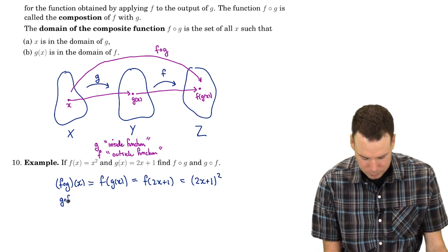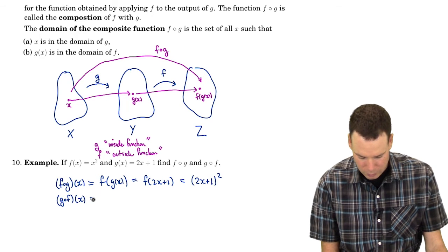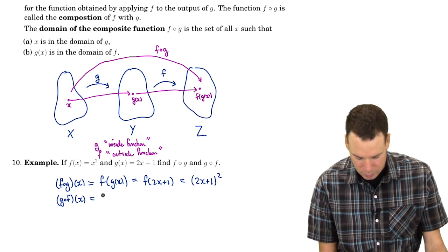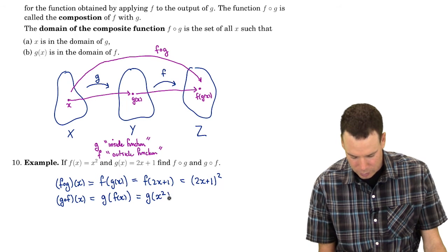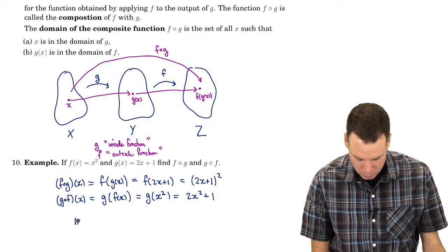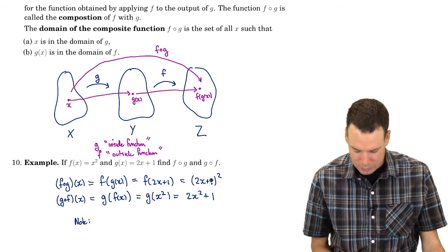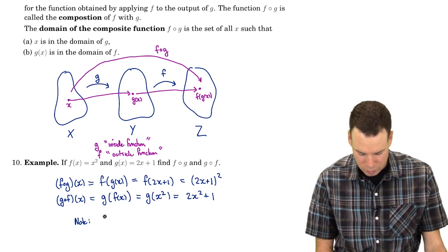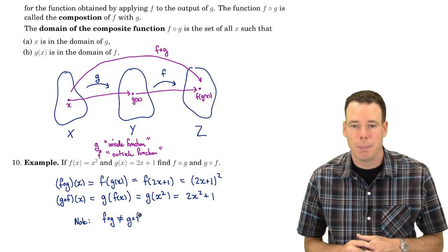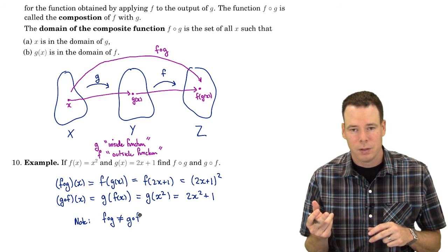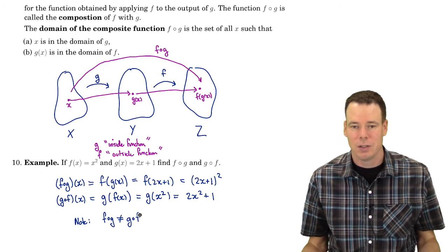On the other hand, g composed with f at x means we do f first and then g second. So this is g of x squared, which gives 2x squared plus 1. We need to note that these are different functions — f composed with g does not equal g composed with f. So the order in which composition is done matters; doing it one way will likely give a different function than the other way.